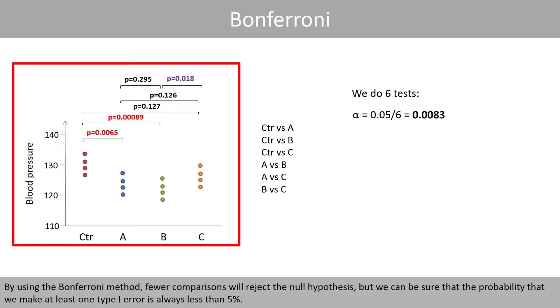By using the Bonferroni method, fewer comparisons will reject the null hypotheses, but we can be sure that the probability that we make at least one type 1 error is always less than 5%.